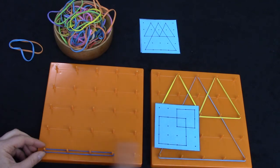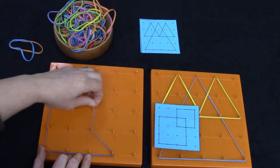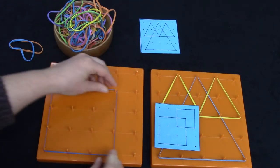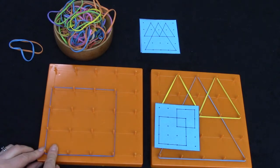This goes one two three four spokes. One two three four spokes and it goes up four and over four. So it's a true square. It is one two three squares by one two three squares.